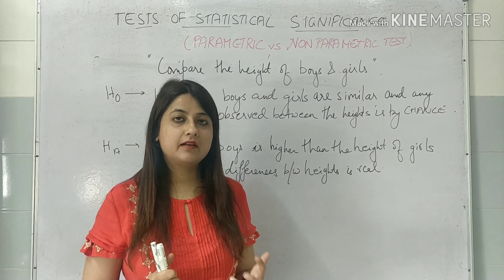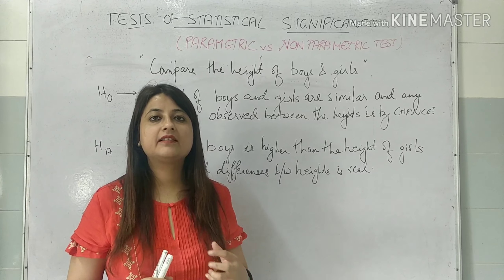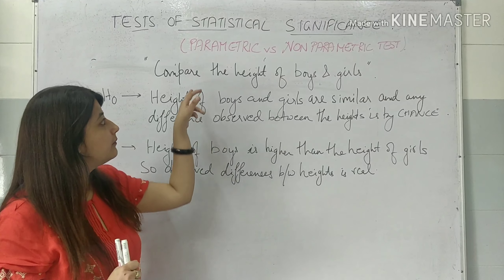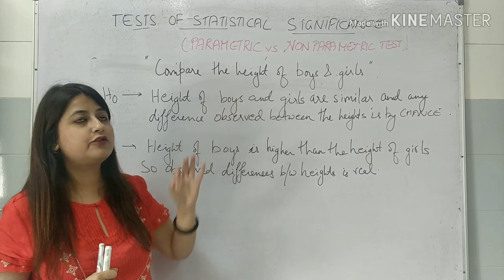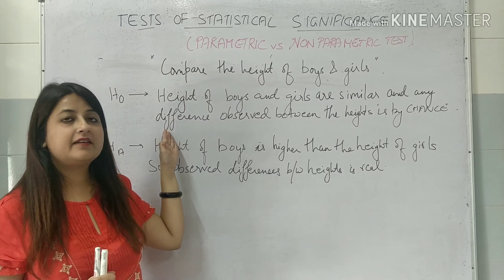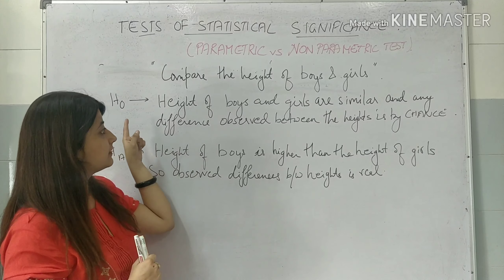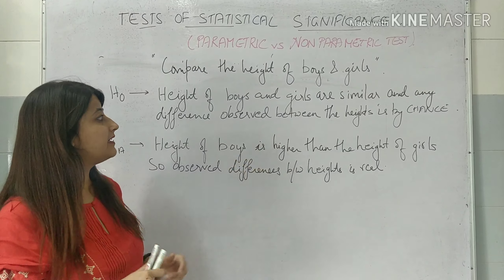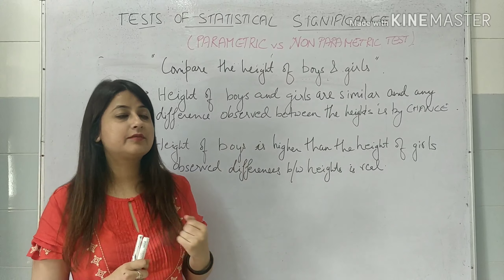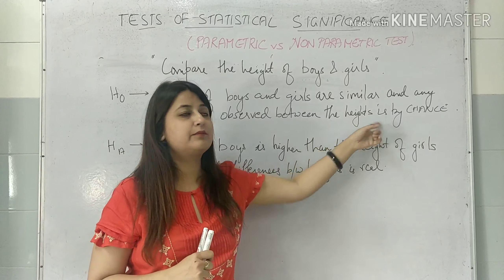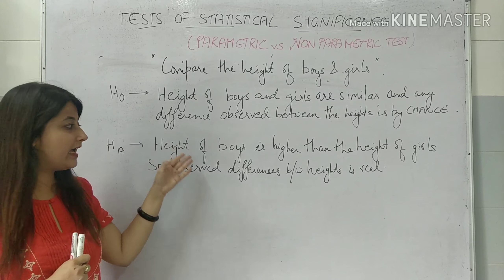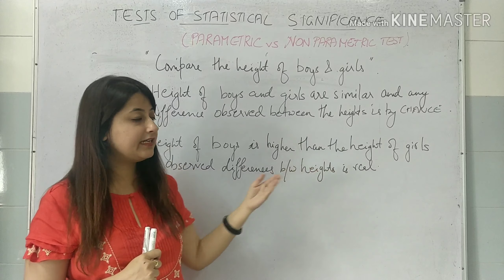A hypothesis, if you have seen my earlier videos, you would understand it is a statement that is yet to be verified. So I will put an example for you. Suppose a researcher wants to compare the height of boys and girls. For this, he will generate a null hypothesis and an alternate hypothesis. The null hypothesis in this case would be that the height of boys and girls are similar, and any difference observed between the heights is by chance. The alternate hypothesis will be that the height of boys is higher than the height of girls.